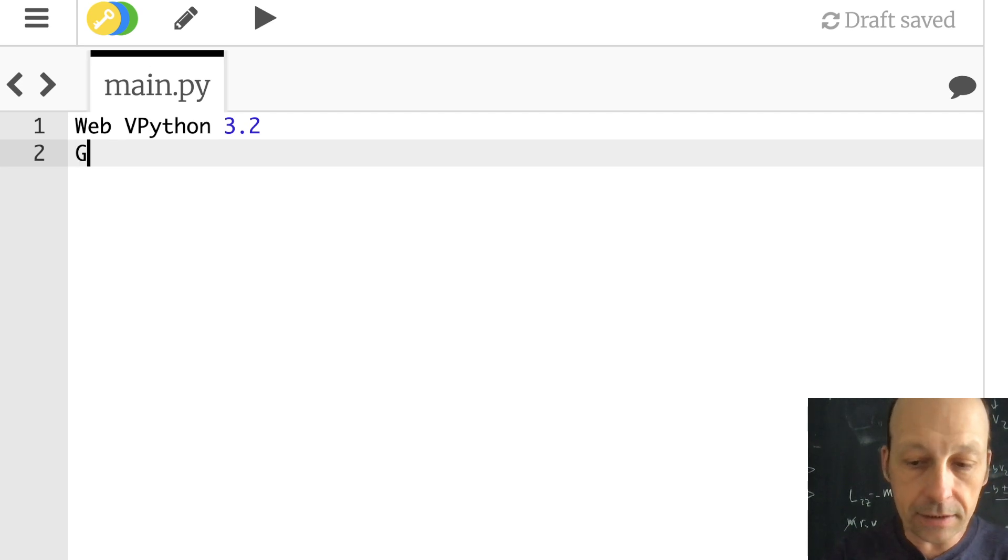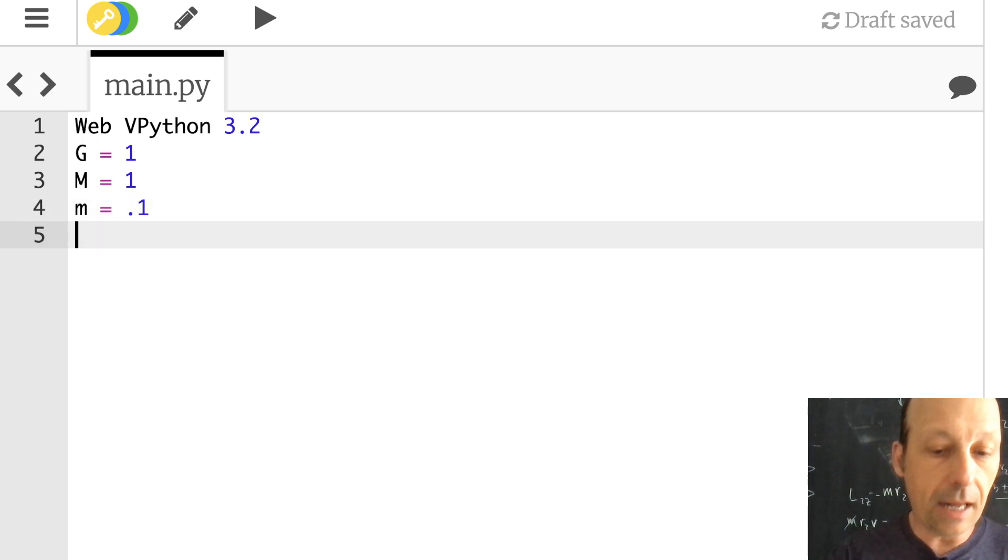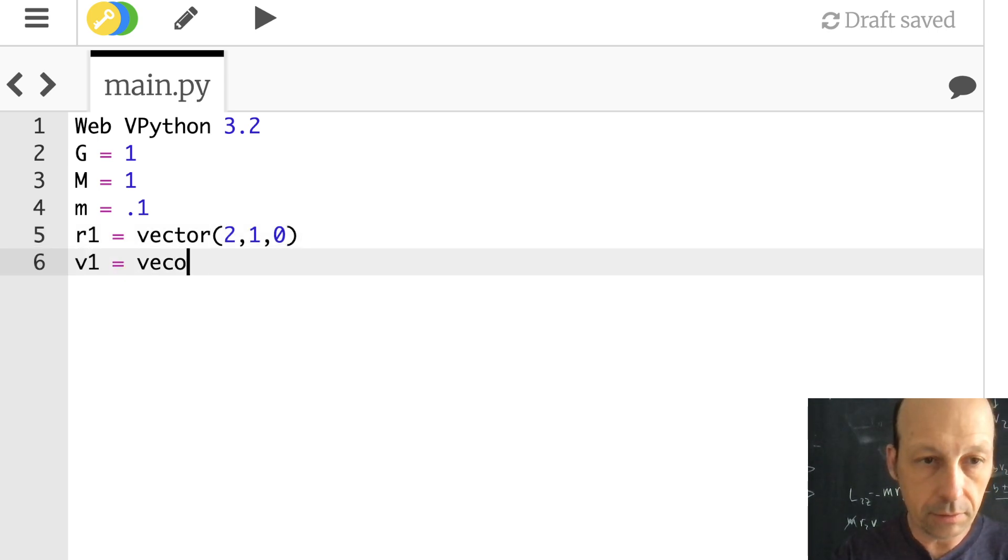Python activated now. So I'm just going to put my constants in here. G is 1, M is 1. I'm going to say this is 1, 2. But let's put it at 0.1. And then I had R1 was the vector. Oh, it was 2, 1, 0. And then V1 was the vector negative 0.65, 0, 0. And do I need anything else? No.